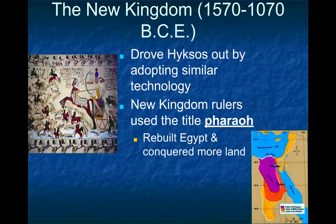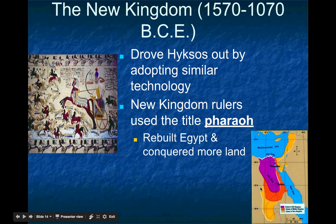The New Kingdom followed about a 200-year period of instability once the Hyksos defeated the Middle Kingdom. The Egyptians successfully drove the Hyksos out by adopting the battle technology the Hyksos had used against them. The New Kingdom again saw major military expansion — expanding even farther south into Nubia, conquering the rest of the Sinai Peninsula, and moving further north into the west bank of the Mediterranean Sea. They also took parts of Syria and expanded into the northern reaches of the Mediterranean, getting close to Europe.